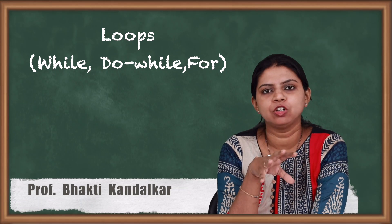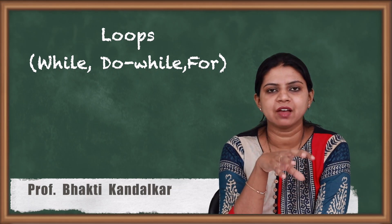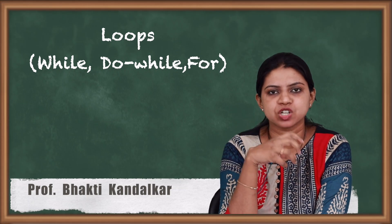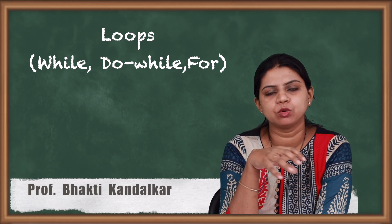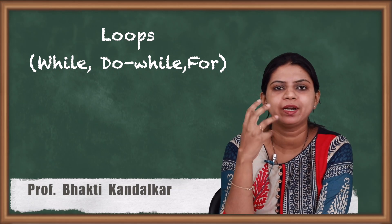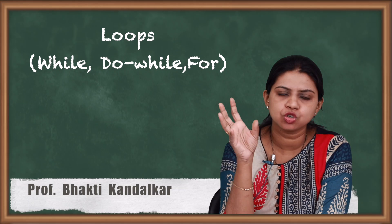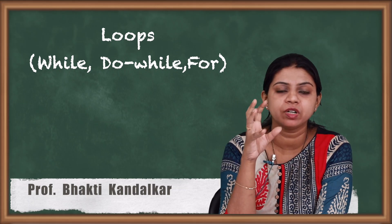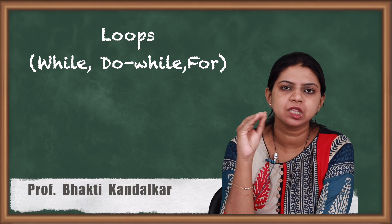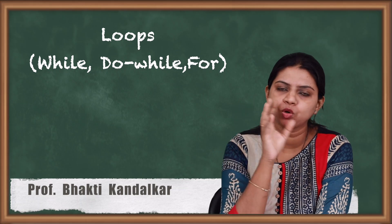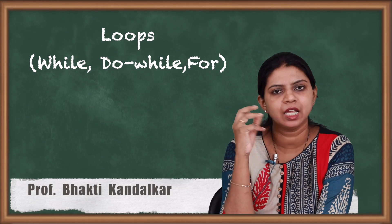There are three types of loop: for loop, while loop, and do-while loop. All three have similar functionality — they are all used to execute a part of a statement more than one time in a program. Only the way of writing each loop is different; the purpose is the same, only the syntax is different.